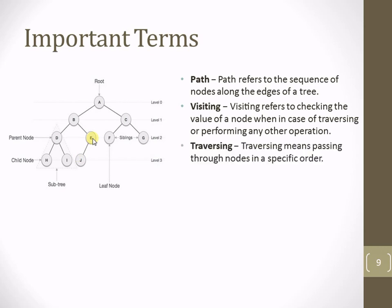Traversing means passing through the nodes in a specific order. For example, traversing from A to J: I pass through nodes A, then B, then E, then J. So I am traversing from A to J through B and E. That is the meaning of the traversing term.